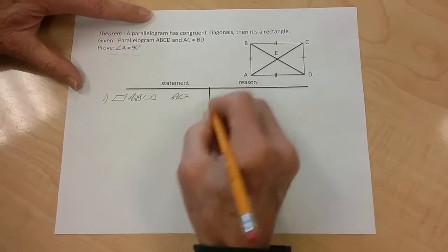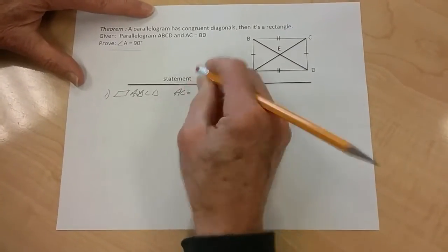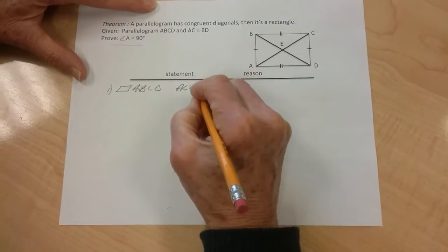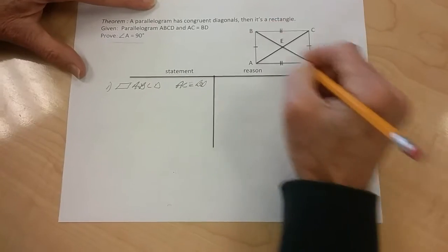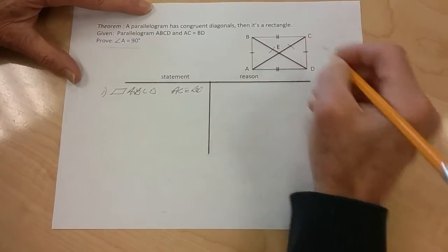And we know that AC is congruent to, or equal to, BD. So therefore, I know that this leg is equal to that leg.